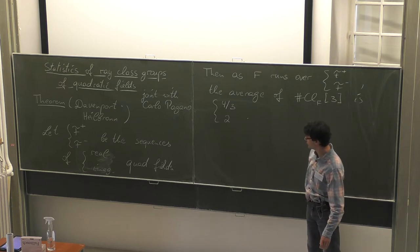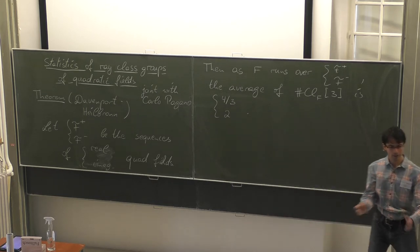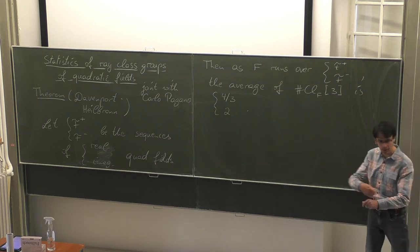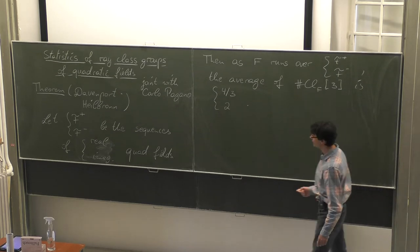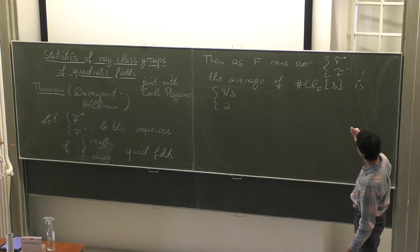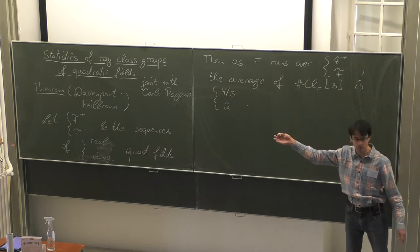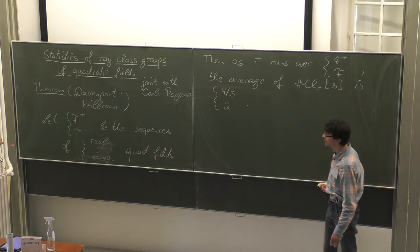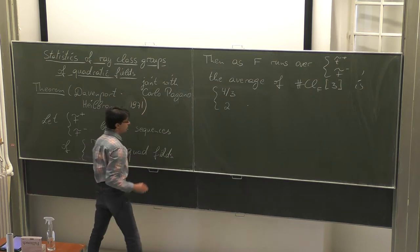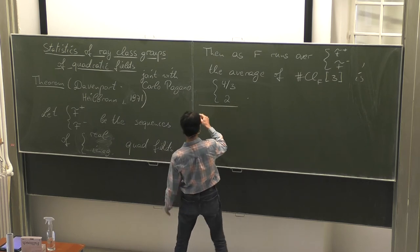The average is understood in the usual sense: you order the fields by discriminant, let the discriminant run up to x, compute the mean among those finitely many fields, and take the limit as x tends to infinity. A natural question is what do these numbers mean? Certainly nobody can prove anything if you replace three by five or even by nine. This was 1971. More than ten years later, Henri Cohen and Hendrik Lenstra did explain these numbers and did much more.